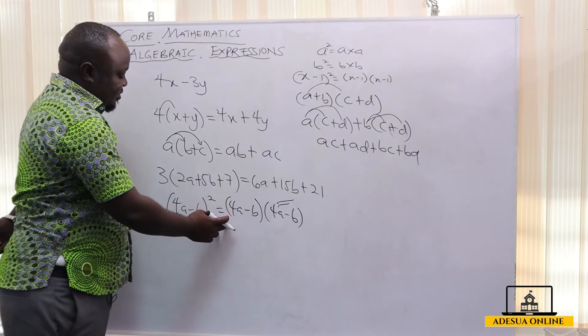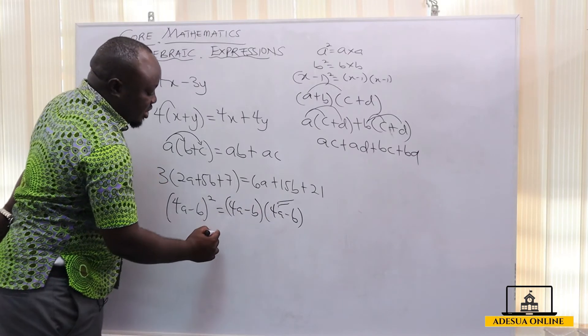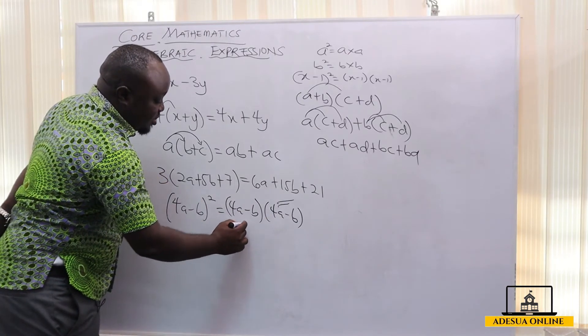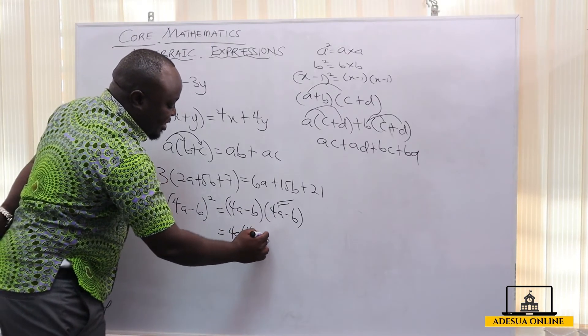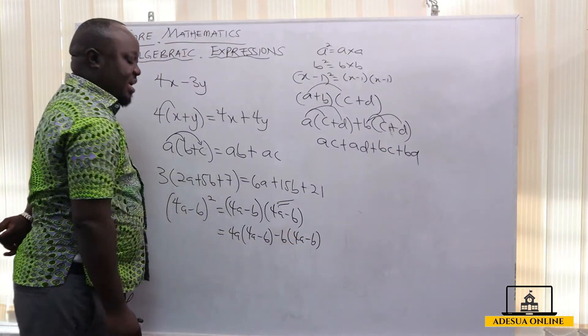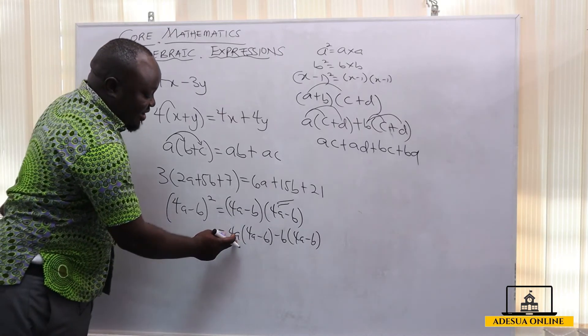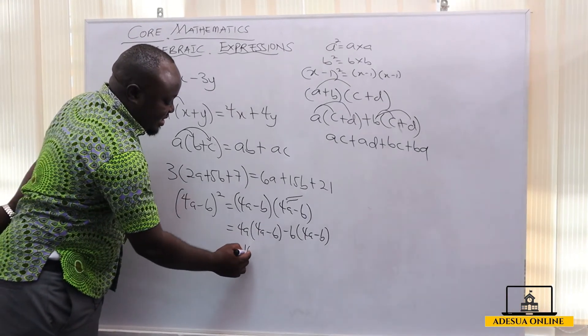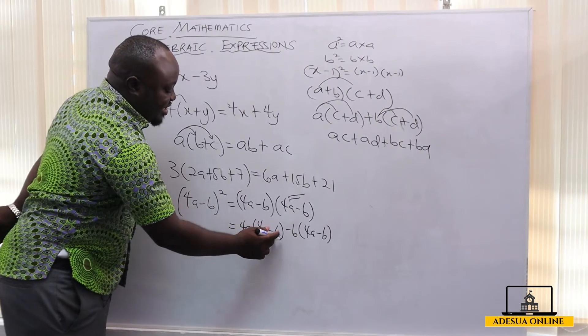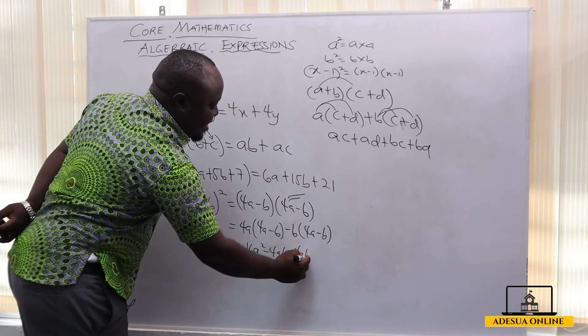When it comes to 4a minus b all squared, we can express it as 4a minus b times 4a minus b. This is going to give us 4a into 4a minus b, then minus b into 4a minus b. When we expand, we shall have 4a times 4a which is 16a² minus 4ab.